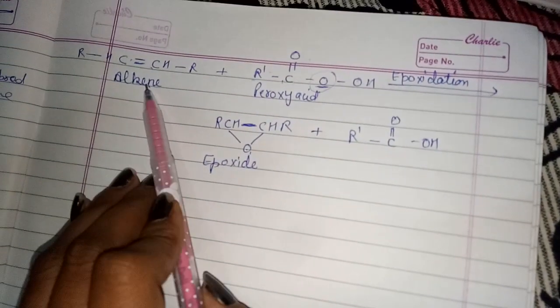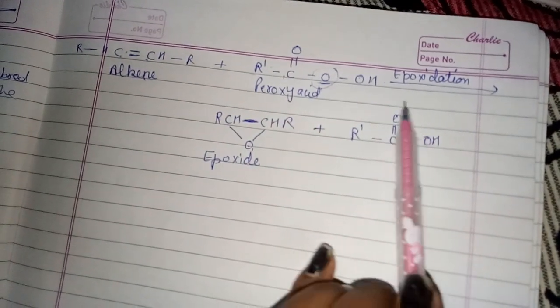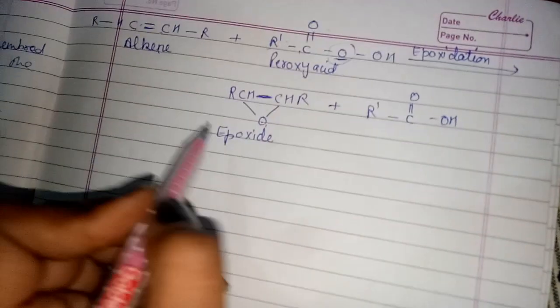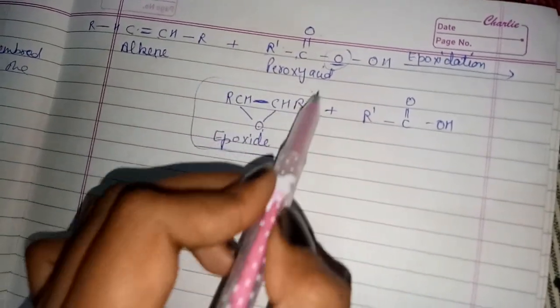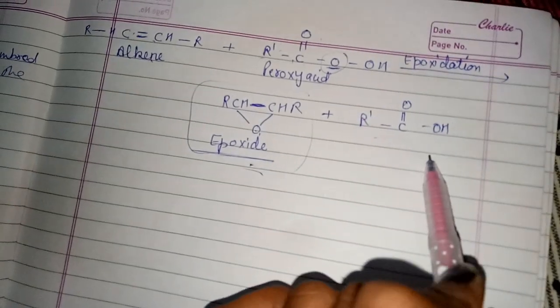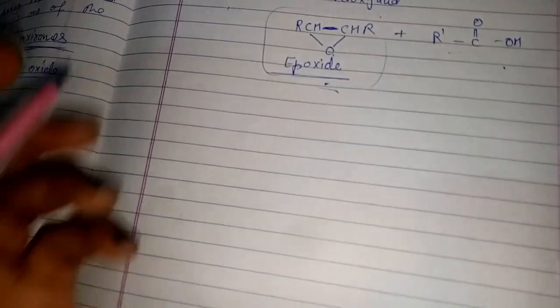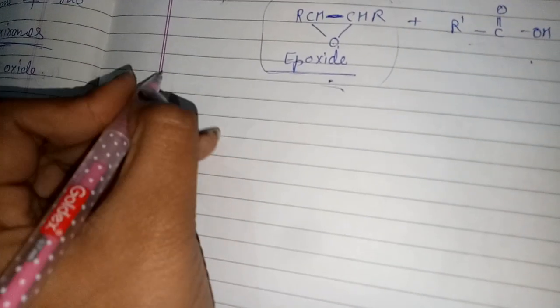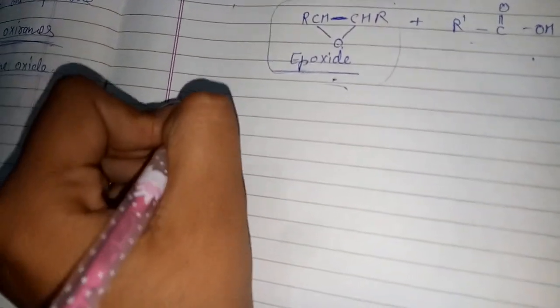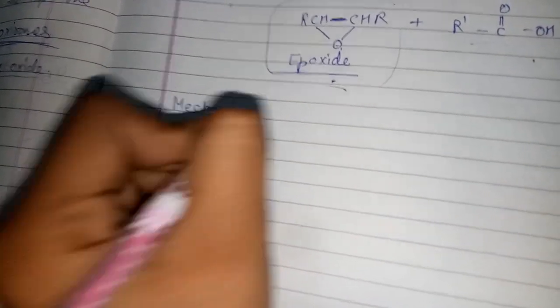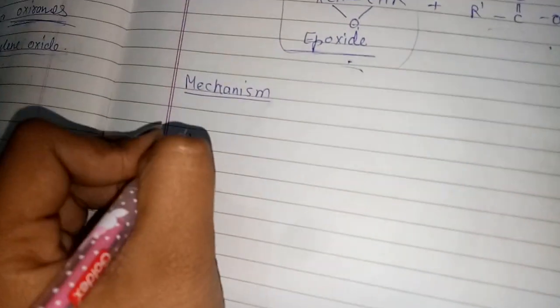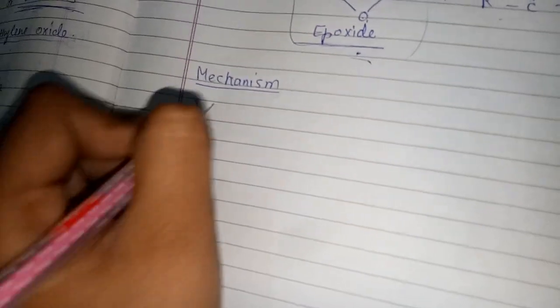This is the reaction: when an alkene reacts with peroxy acid, the process is epoxidation and we get an epoxide as the main product. To form the epoxide mechanism, we take a carbon-carbon double bond.